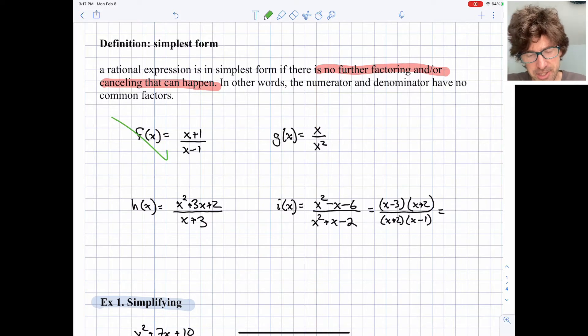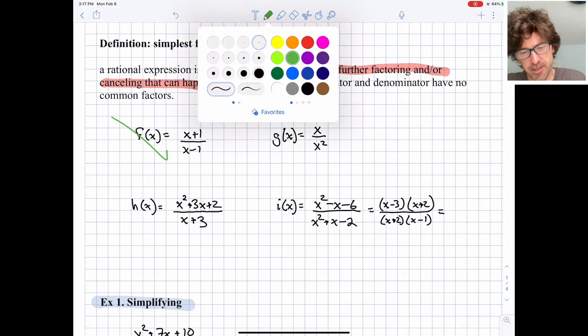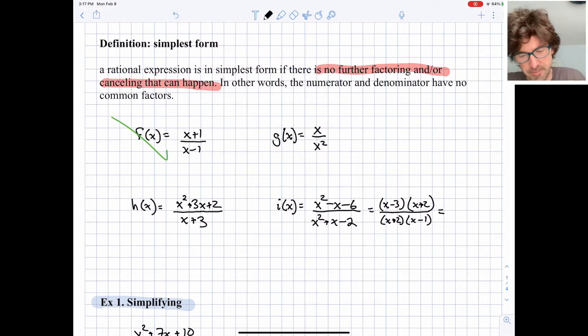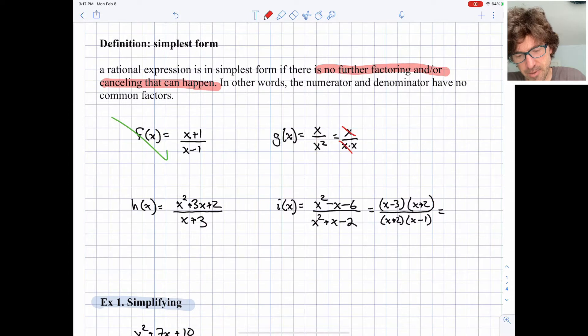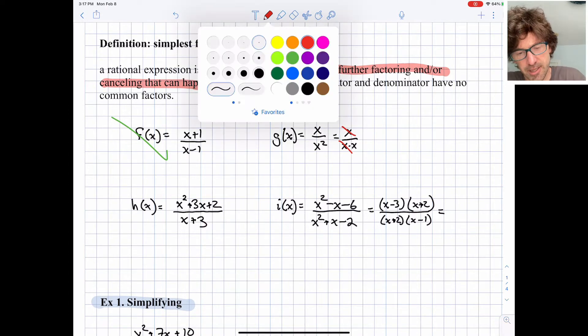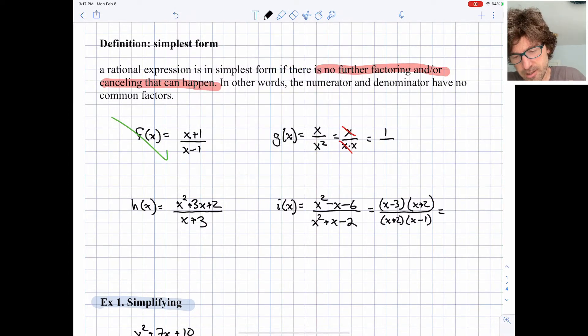In contrast, g(x) equals x over x squared is not yet in simplest form because, as I'm sure you know, x squared is x times x, and then one x up top and one x down below can cancel. And then we can rewrite this as g(x) equals 1 over x. So that would be our simplest form for that one.